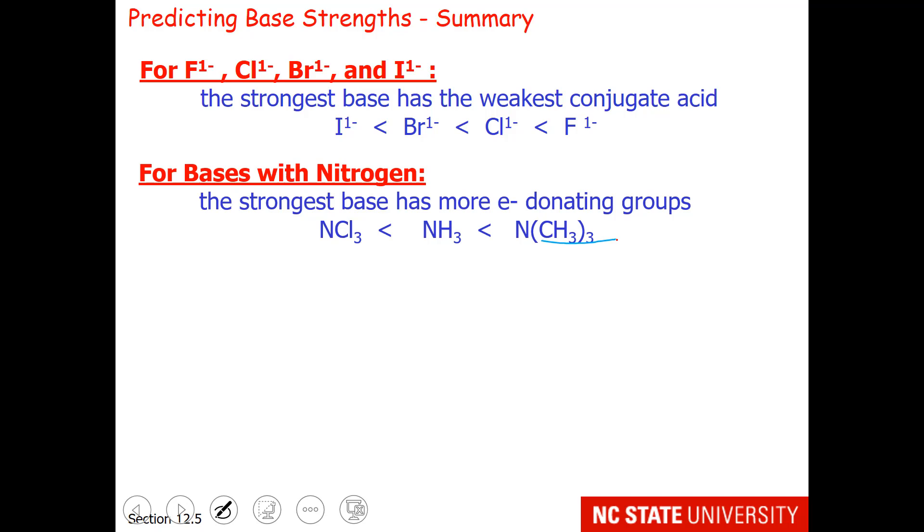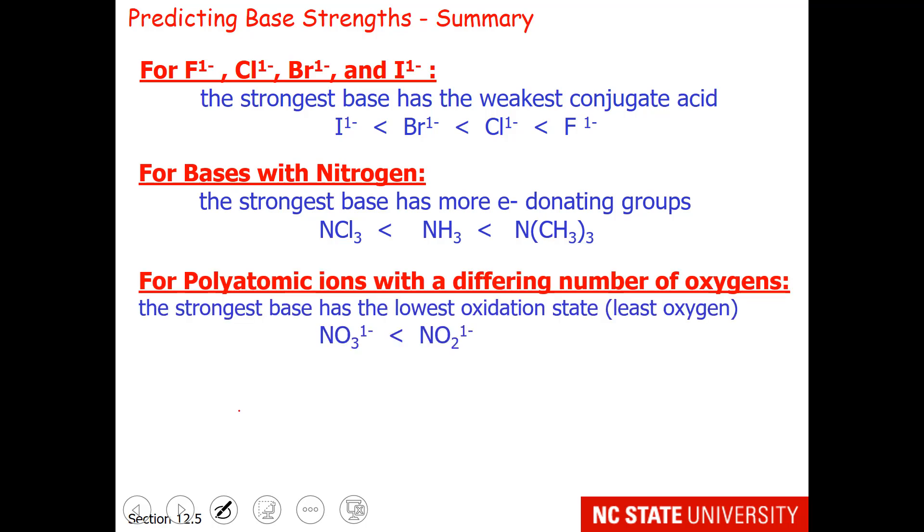So having methyl groups produces a stronger base than having halogen groups. For polyatomic ions with a differing number of oxygens, remember that more oxygen makes a stronger acid and less oxygen makes a weaker acid. So the opposite is true of the bases. The strongest base will have the lowest oxidation state which means it has the least oxygen.